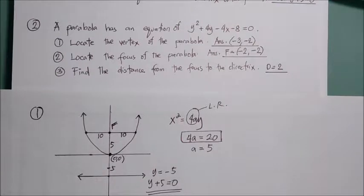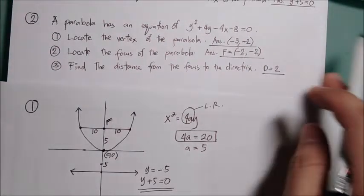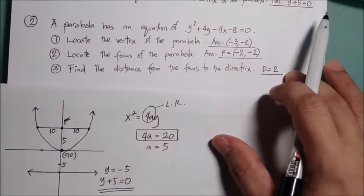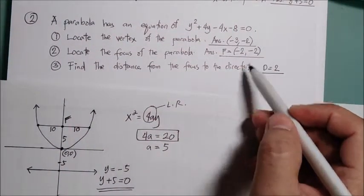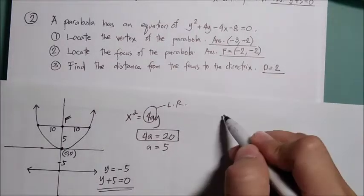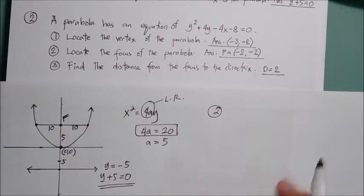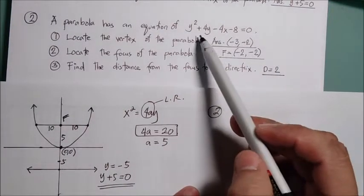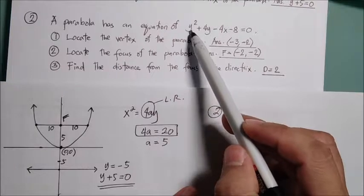Problem 2: The parabola has an equation of y² + 4y − 4x − 8 = 0. Locate the vertex — the answer is (−3, −2). Locate the focus — F(−2, −2). Find the distance from the focus to the directrix, which is 2. Since this equation has y², it opens to the right and the vertex is at (h, k).